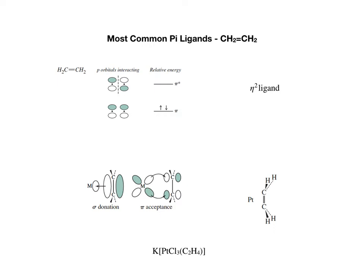The first is a sigma type donation — that's the donation of the pi electron to the metal. This may sound counterintuitive: even though the ligand is using a pi electron, the type of interaction is sigma. At the same time, there's a pi star orbital, so ethylene can serve as a pi acceptor, getting electron density from the metal's d orbital. So there will be a sigma donation and pi acceptance.